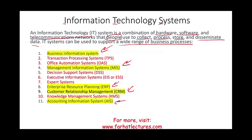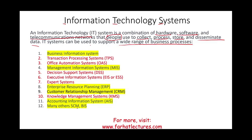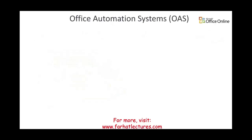Are these the only information systems? The answer is no. We could have many others, such as supply chain management systems, business intelligence (BI) systems, and so on. In this session, I'm going to start discussing the systems, and I'll begin with the one you are most comfortable with: the Office Automation System, or OAS.